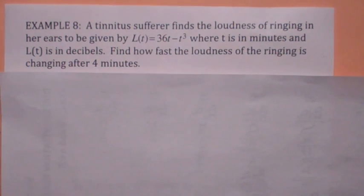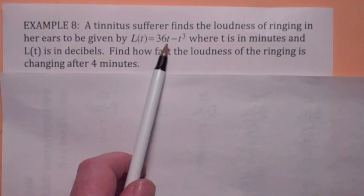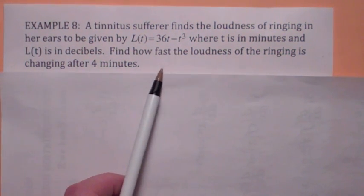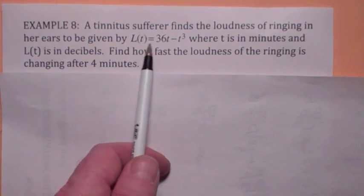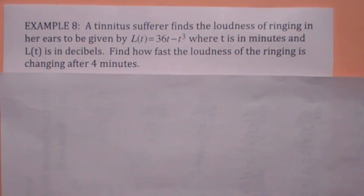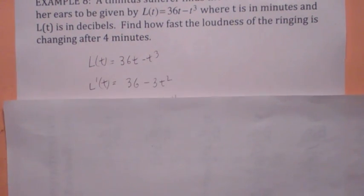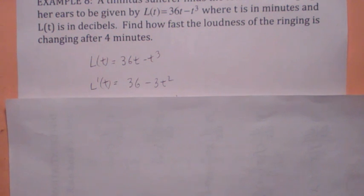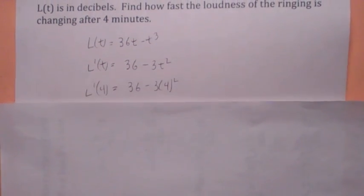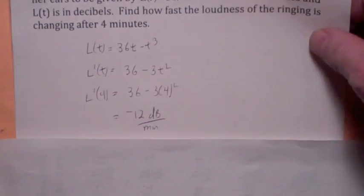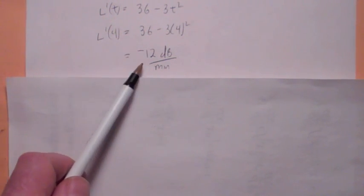This last problem involves tinnitus — a ringing in the ears. Suppose a tinnitus sufferer finds that the loudness in decibels of the ringing is given by a formula where t is in minutes. The question is: how fast is the loudness changing after 4 minutes? Whenever something asks 'how fast,' that's the derivative. So we find L prime, which equals 36 minus t squared, and evaluate L prime at 4. The units are decibels per minute. Plugging in 4 gives negative 12 decibels per minute — meaning the ringing is decreasing, getting softer, at 12 decibels per minute.